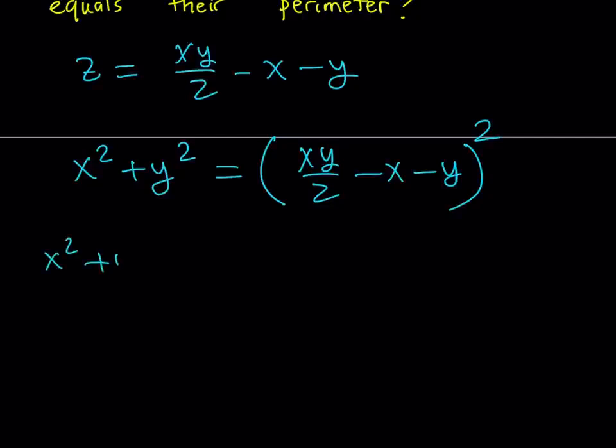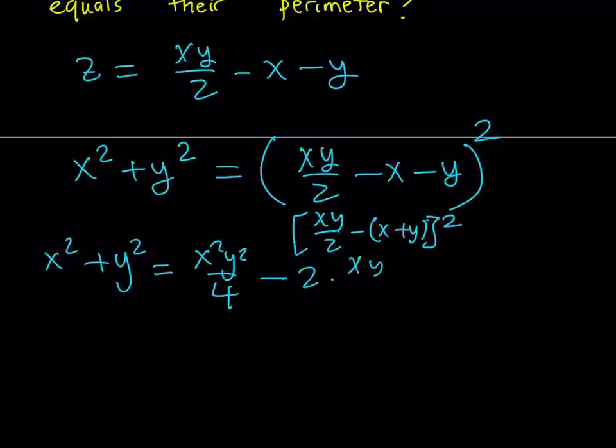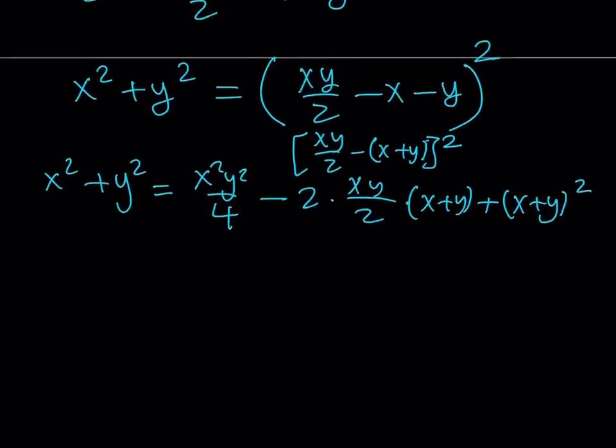Let's go ahead and square this. When I'm squaring this, allow me to write it this way, so I can square like a difference a - b. So it's going to be: square first term minus two times the first times the second, which is x + y, plus (x + y)².